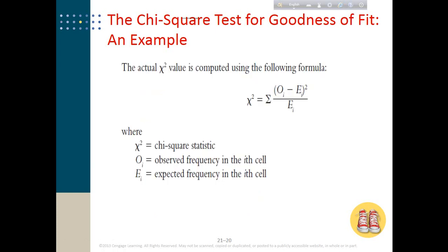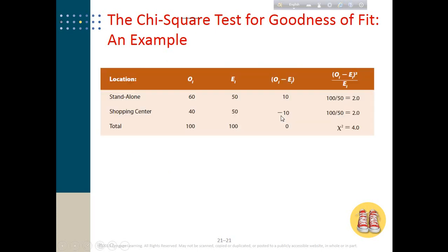To test this, we calculate the chi-square statistic. The formula is: for each cell, take the observed frequency minus the expected frequency, square it, divide by the expected frequency, and then sum them all up. With observed frequencies of 60 and 40 and expected frequencies of 50 and 50, each calculation gives us 2, and the total chi-square statistic is 4.